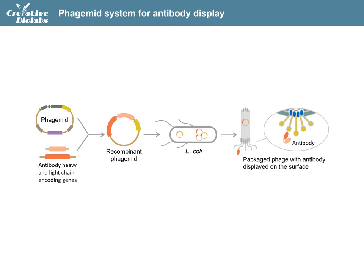In another system, a helper phage is co-transformed into the E. coli with the phagemid, as the phagemid does not have all the genes necessary to encode a full phage in E. coli. This system, with the helper phage providing the necessary components, takes advantage of producing target antibodies in a higher ratio.